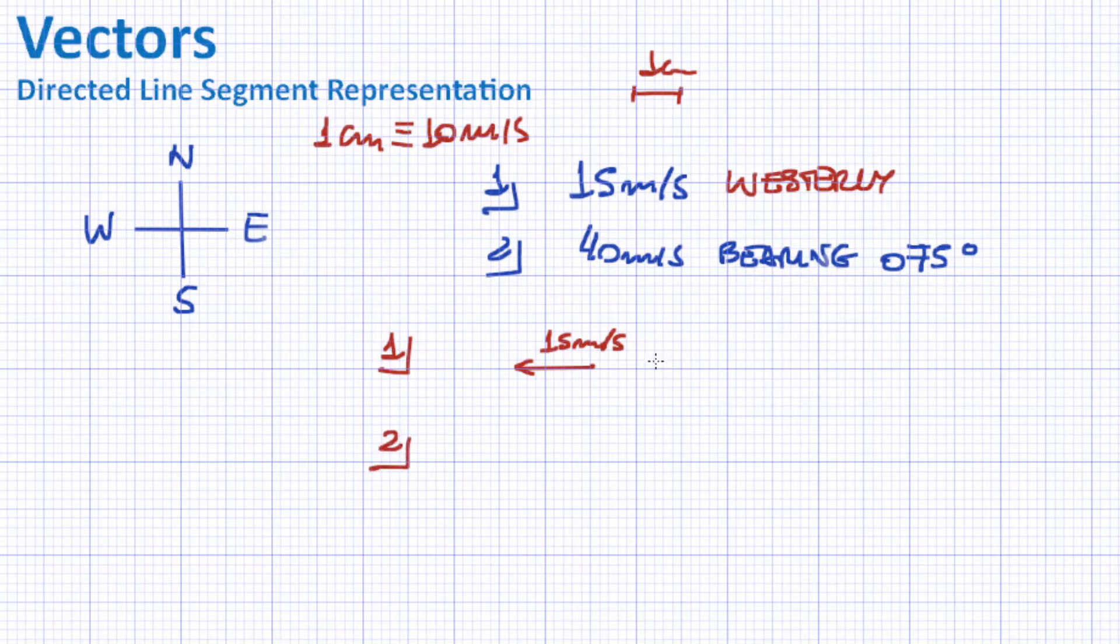On the second problem here, it's 40 meters per second of a bearing of 075 degrees. So bearings, they're measured from north, north and clockwise.